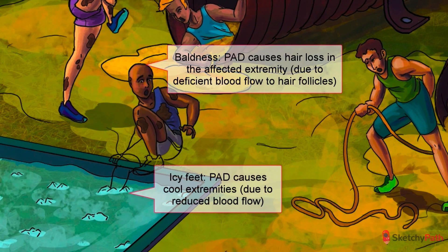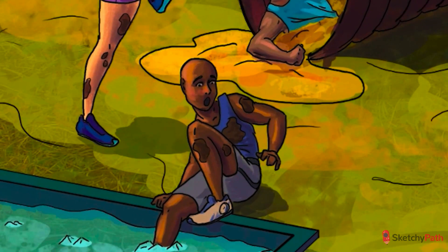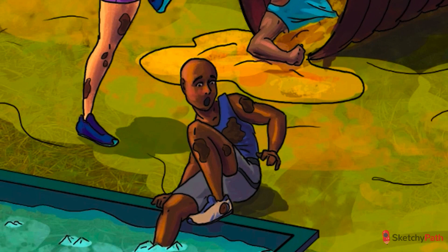Reduced blood flow to the extremities causes them to be cool to the touch. Deficient blood flow to the hair follicles can lead to partial or complete loss of hair. Since the skin is the most distal organ perfused by the peripheral arteries, it's uniquely prone to ischemia, and arterial ulcers are one of the toughest sequelae of PAD to treat. Ischemic skin ulcers often form on the lateral ankle or pressure points, such as the heel or where ill-fitting shoes rub. These lesions usually have a punched-out look with well-defined margins and often extend deeply, sometimes all the way to the underlying muscle or bone, and usually don't bleed or show any signs of granulation tissue.